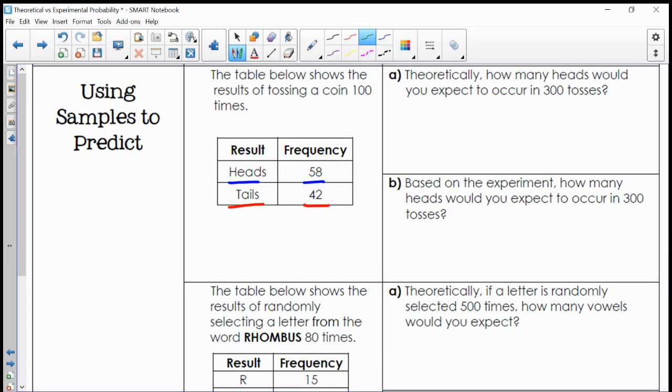Notice the result of it being heads occurred 58 times. That was the frequency of that event. The result of tossing tails occurred 42 times. That was the frequency of that event. Let's talk about part A here. Theoretically, how many heads would you expect to occur in 300 tosses?